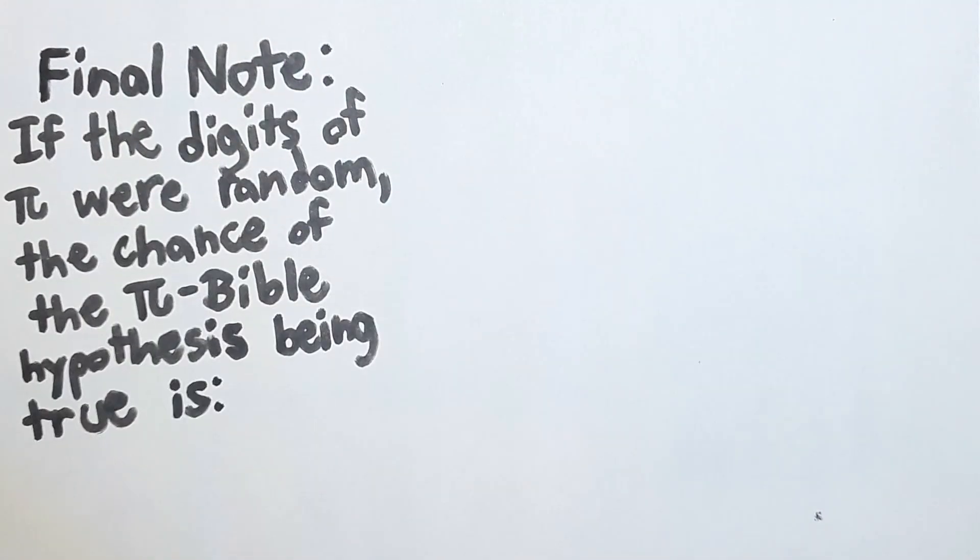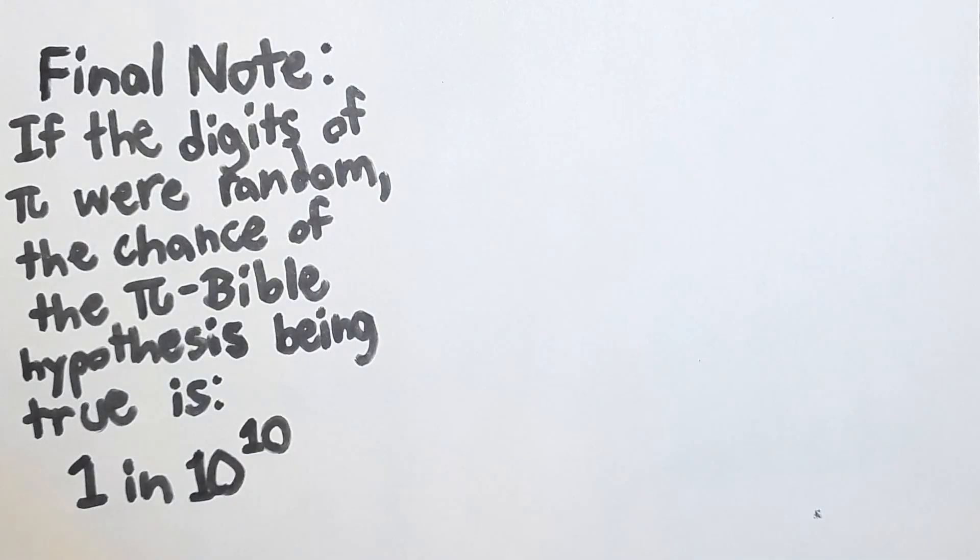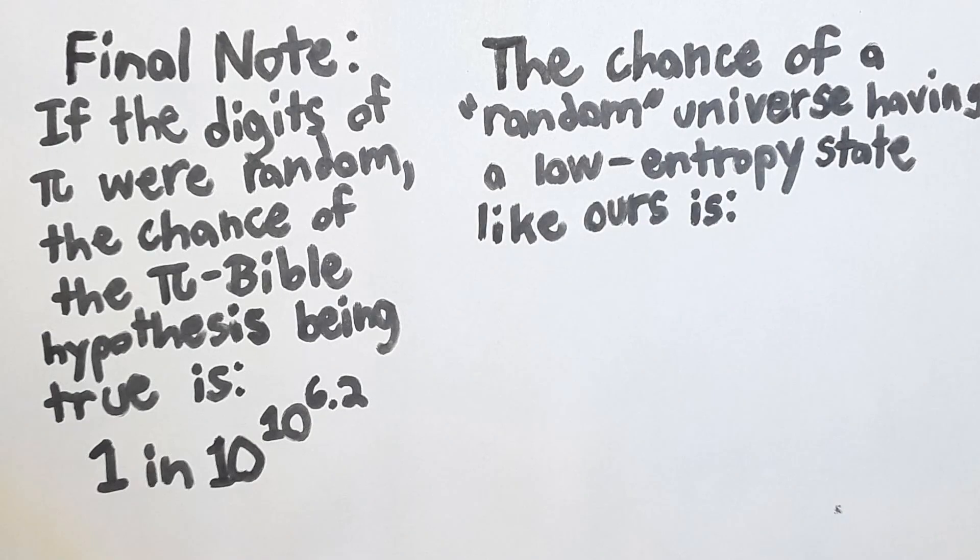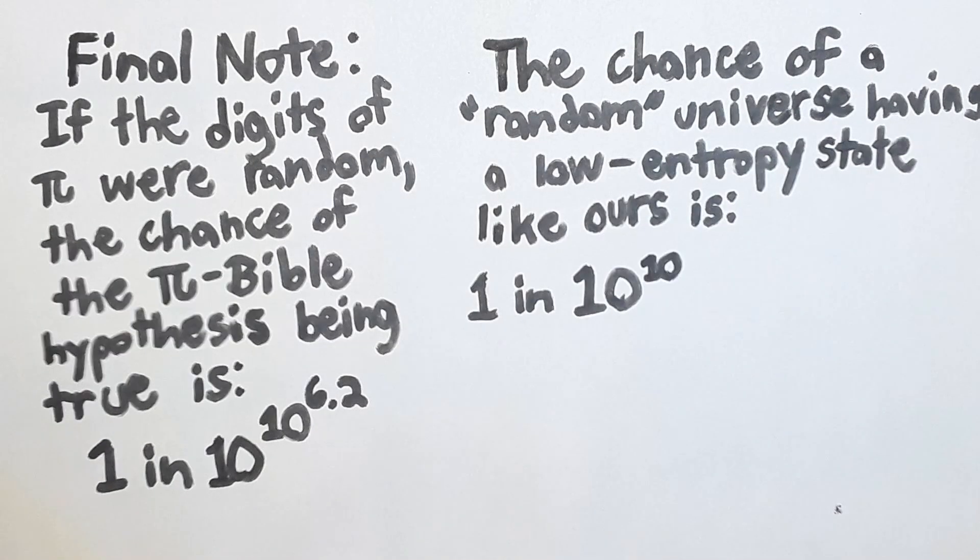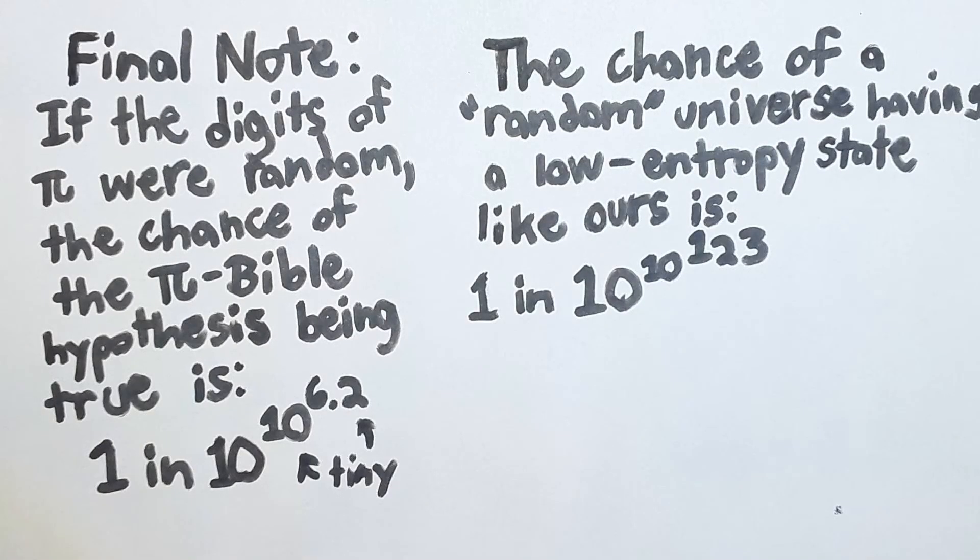One final note. If the digits of Pi were chosen randomly, the chance that the Pi Bible hypothesis is true is roughly 1 in 10 to the power of 10 to the power of 6.2. The chance of a random universe having a low entropy initial condition like ours is 1 in 10 to the power of 10 to the power of 123. That makes that other number down there look super tiny. So the Pi Bible hypothesis, if true, would be way less surprising than the fine-tuning in the universe.